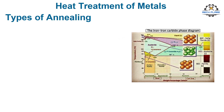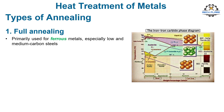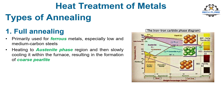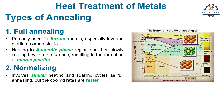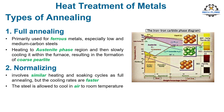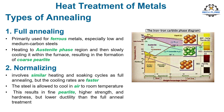Full annealing is a heat treatment process primarily used for ferrous metals, especially low and medium carbon steels. It involves heating the material to the austenite phase region and then slowly cooling it within the furnace, resulting in the formation of coarse pearlite. Normalizing involves similar heating and soaking cycles as full annealing, but the cooling rates are faster — the steel is allowed to cool in air to room temperature. This results in fine pearlite, higher strength and hardness, but lower ductility than the full anneal treatment.